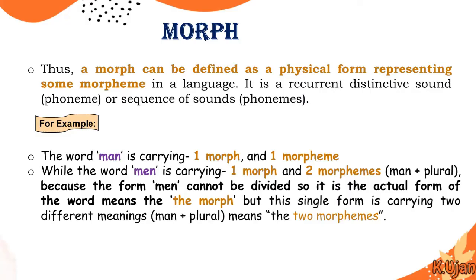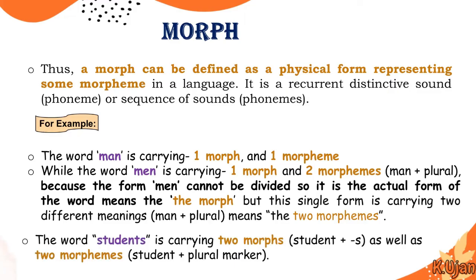The single form 'men' carries two different meanings: man plus plural — two morphemes. The word 'students' carries two morphs because physically there is 'student' and 'S'. These are two morphs and two morphemes: student plus the plural marker. 'Students' has two physical forms — student plus S — so it consists of two morphs and two morphemes, since S has a grammatical function.